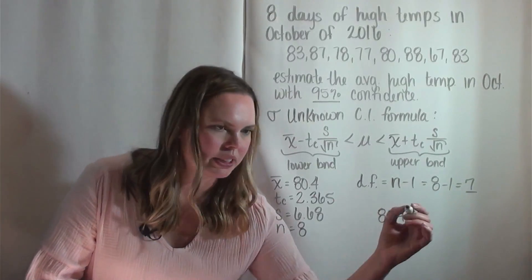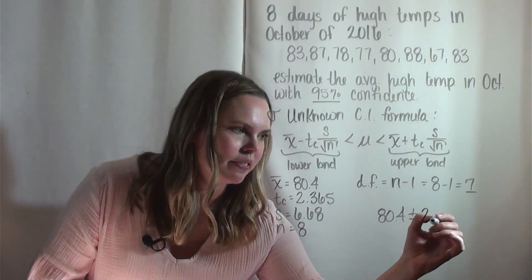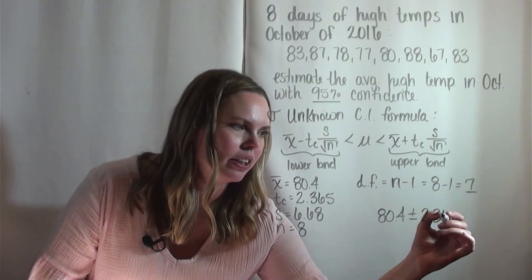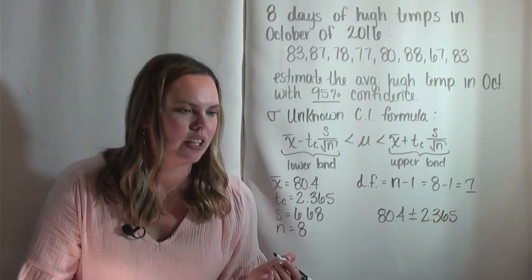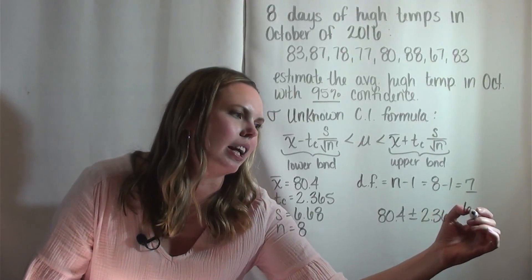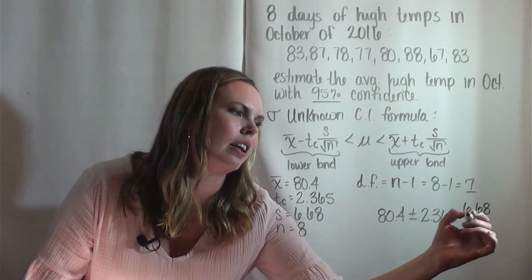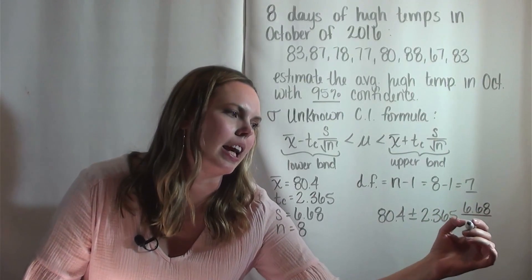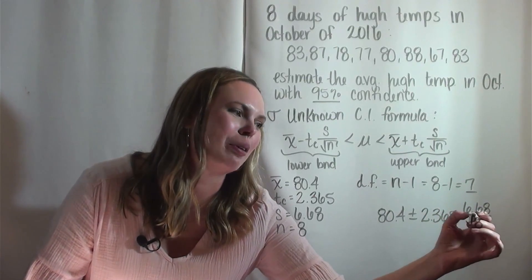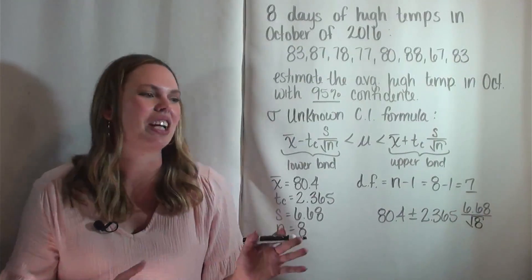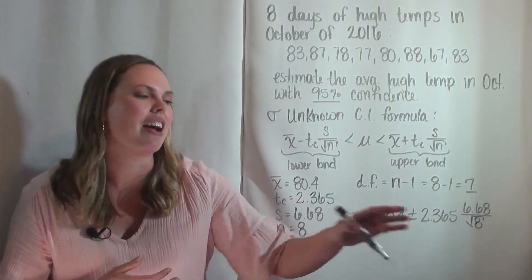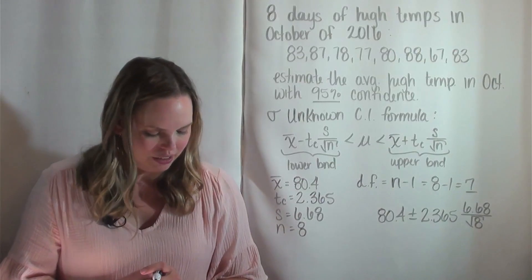So 80.4 plus or minus this 2.365, which is my T sub C. S is 6.68, and then N is 8. Remember that N is 8, so don't revert back to those degrees of freedom. It's just to go to that chart that you need that.